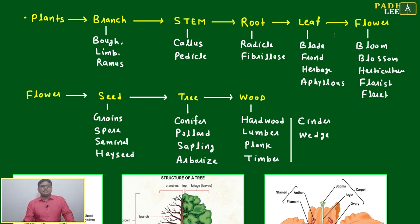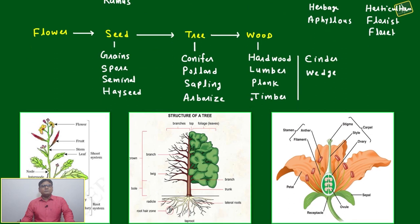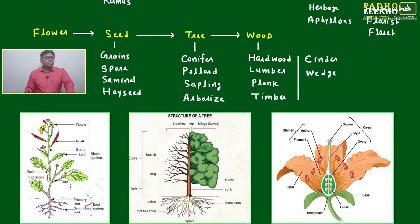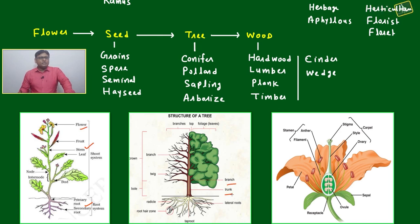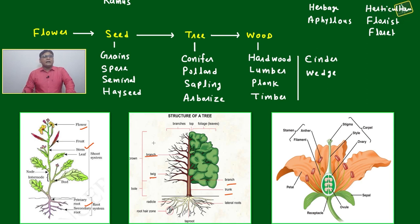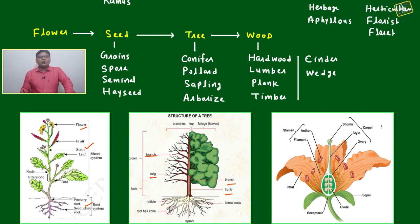Branch, stem, root, leaf, and flower — this is the basic structure of a plant. Here, this is your root, this is your stem, this is your flower, this is your branch, this is your trunk, and this is your twig.